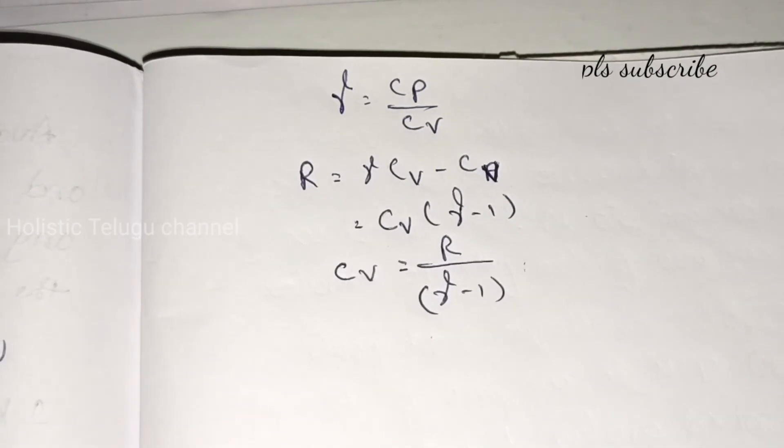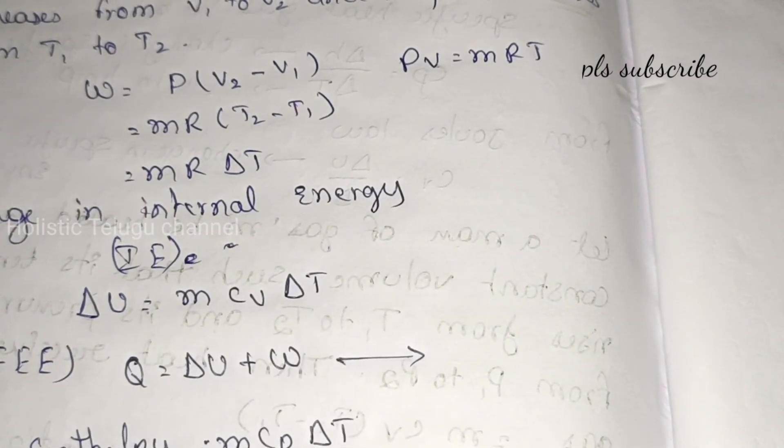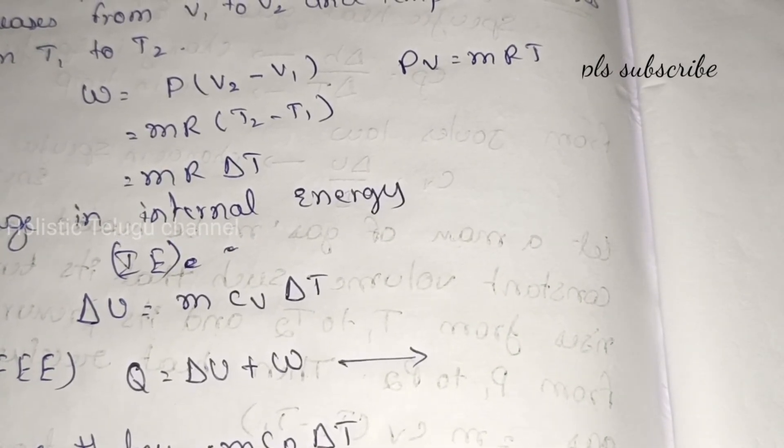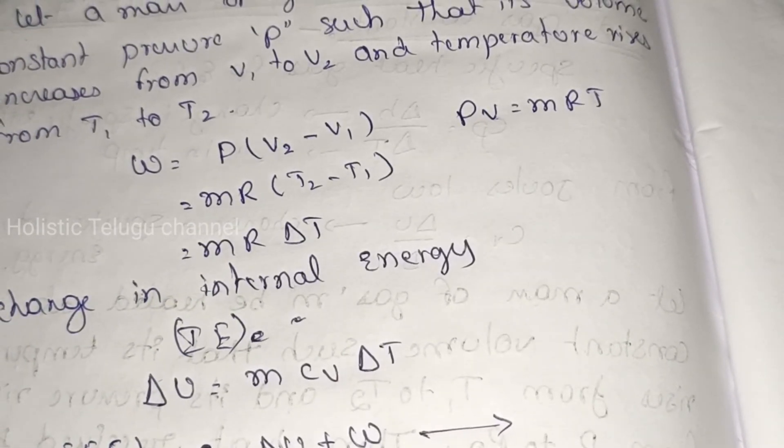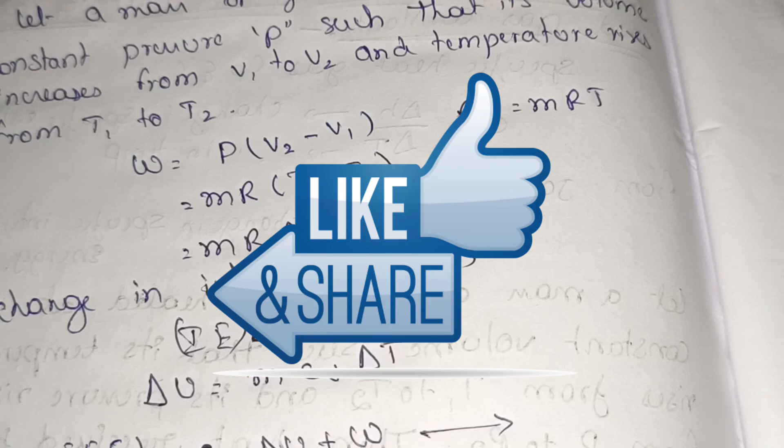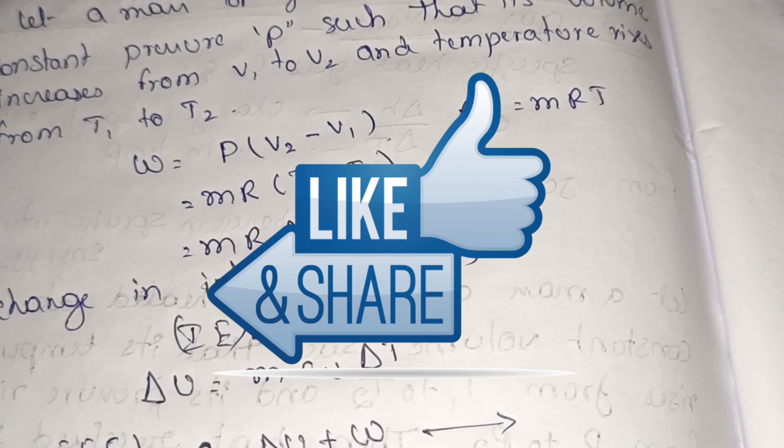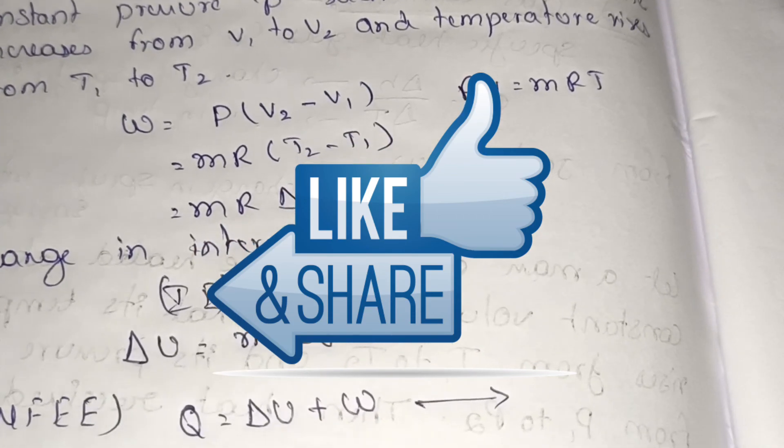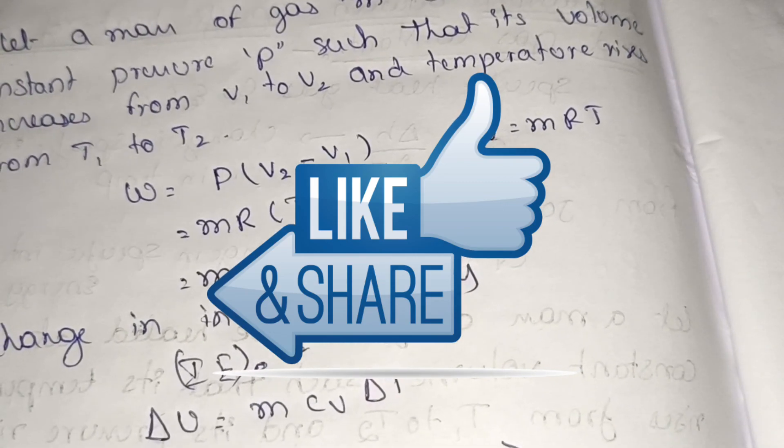So this is the relation. Maximum we use R equal to Cp minus Cv, that is sufficient. So this is today's video. In the next video we will solve problems. If you liked today's video please like and share. Don't forget to subscribe. Thank you for watching.